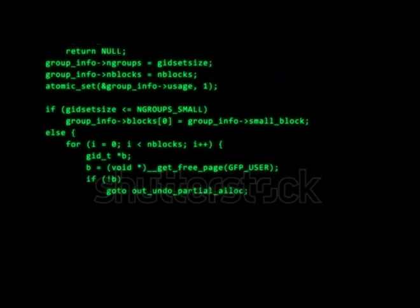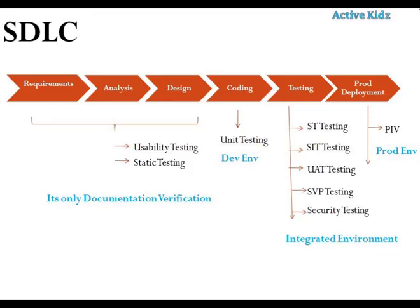Once coding is done and unit testing is successful, the code is deployed into the testing phase. During the testing phase, we perform different kinds of testing: system testing, system integration testing, user acceptance testing, SVP testing, and security testing. Once all these phases of testing are completed, we proceed to production deployment.